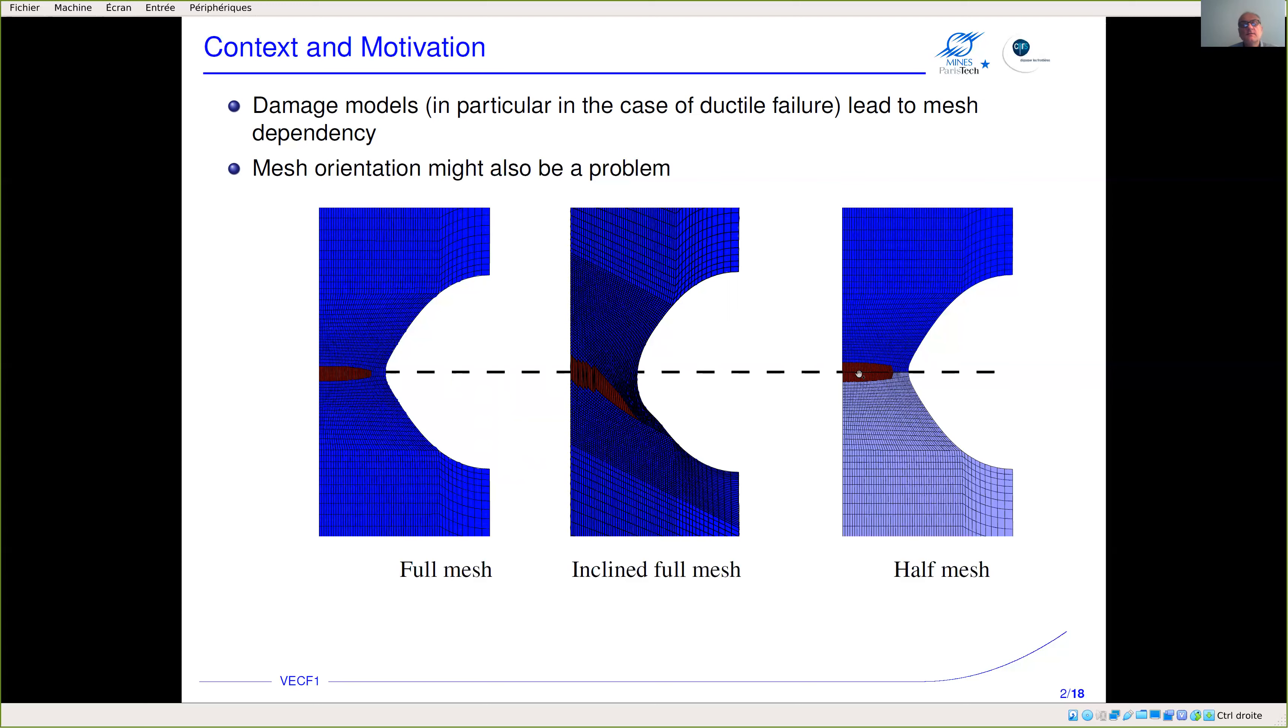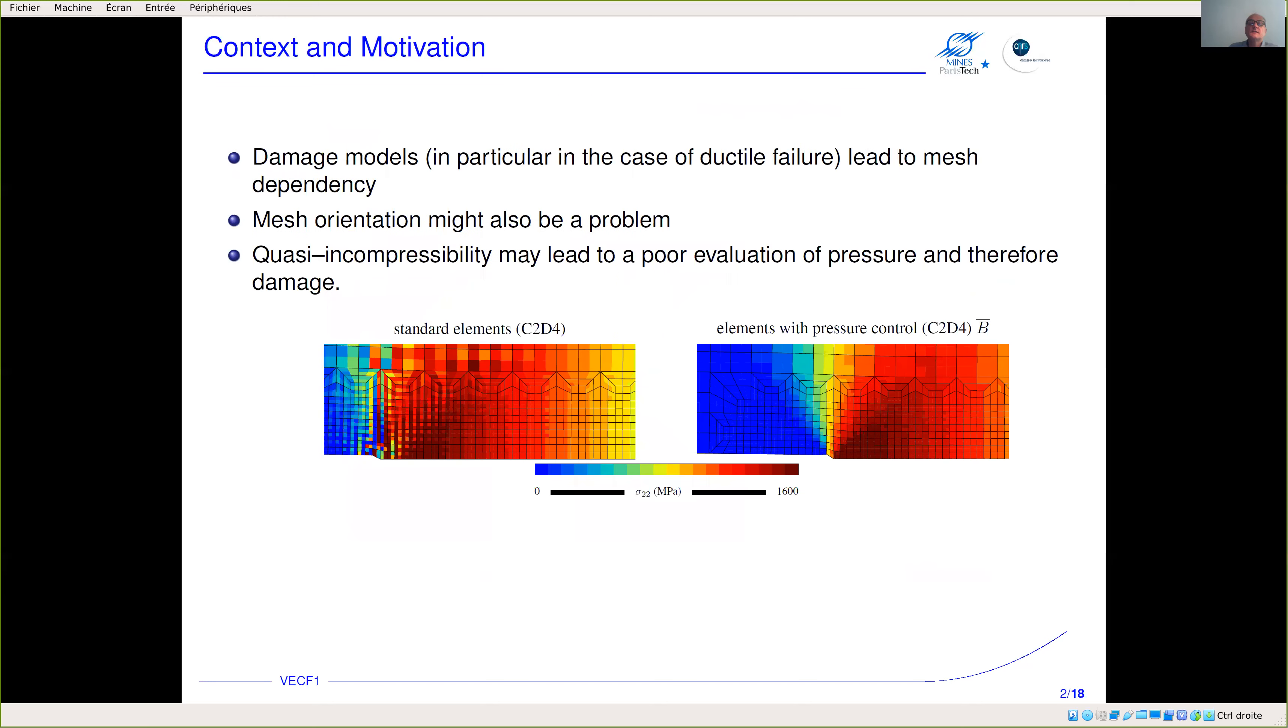Here we have only meshed half of the specimen due to symmetries, and if you compare the thickness of the crack compared to the first one, it's about twice as thick because you break two elements due to the symmetry and therefore you also dissipate more energy.